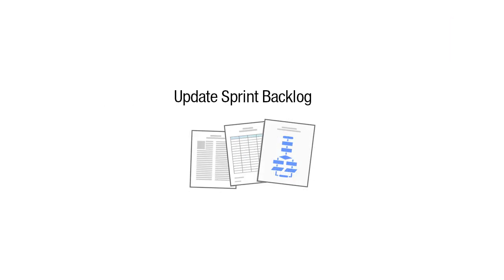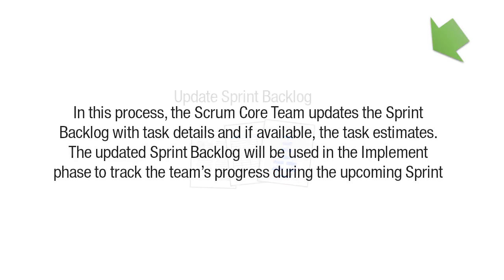The last process in this phase is update sprint backlog. In this process, the Scrum core team updates the sprint backlog with tasks and details and, if available, the task estimates. The updated sprint backlog will be used in the implement phase to track the team's progress during the upcoming sprint.